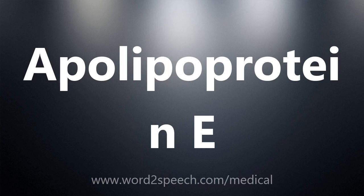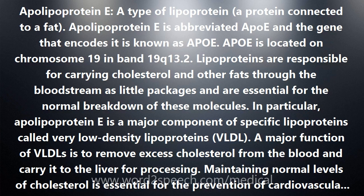Apolipoprotein E is a type of lipoprotein, a protein connected to a fat. Apolipoprotein E is abbreviated APO, and the gene that encodes it is also known as APO. APO is located on chromosome 19 in band 19q13.2.